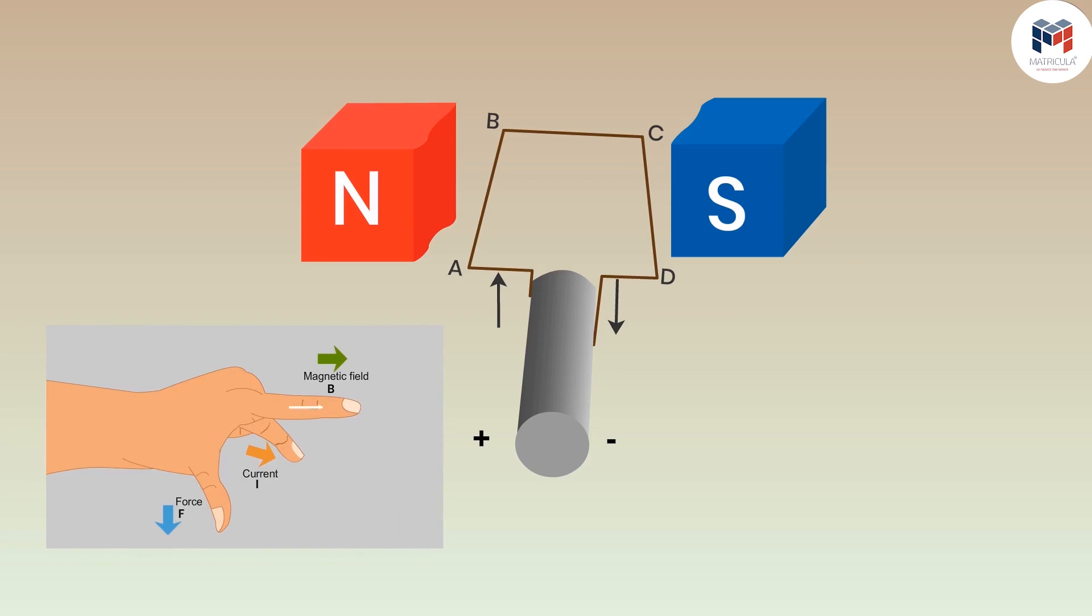Also the current is flowing in this direction on arm AB then the force will be exerted downwards. What will happen if we apply the same rule on the arm CD of the coil?